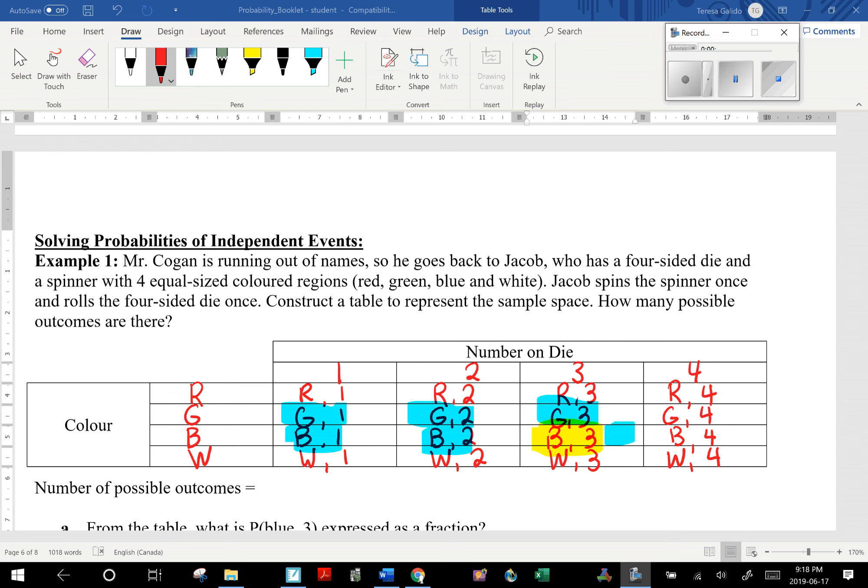Part two of the video is solving probabilities of independent events. Mr. Kogan kind of puts you in a scenario with a four-sided die and a four-equal-sized spinner, and he's running out of names, so he's going to name you based on the outcome of this die and spinner.